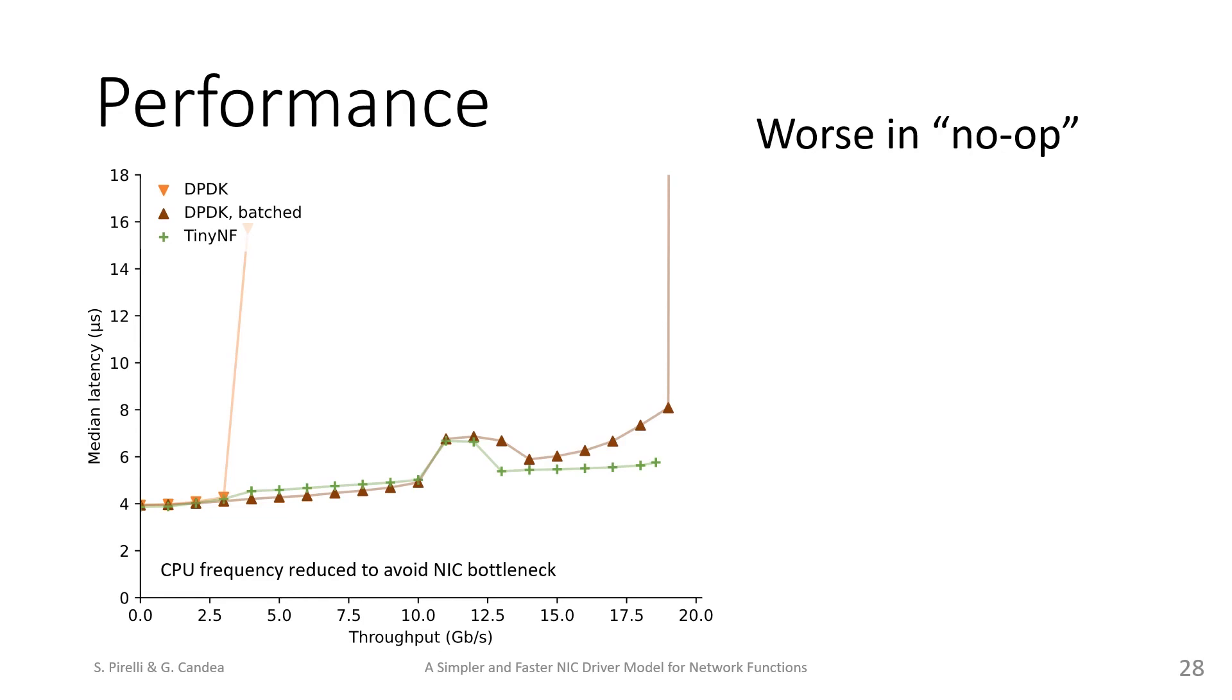We also measured performance using the classic no-op network function, which as its name implies does not actually perform a useful operation. It only writes constants to the MAC addresses of each packet, without any other processing. The semantics of the graph are the same as before, but we used only one core and had to lower the CPU frequency so the internet links wouldn't be bottlenecks. We got a surprising result: TinyNF performs worse than DPDK in this case.